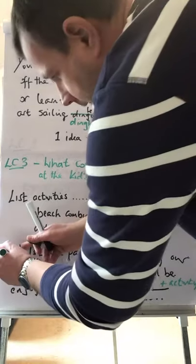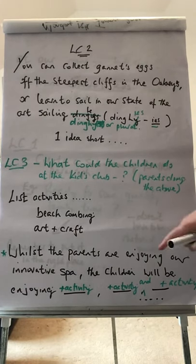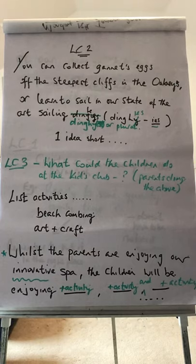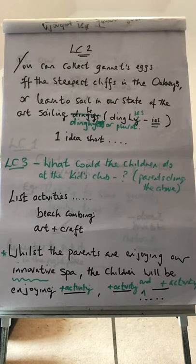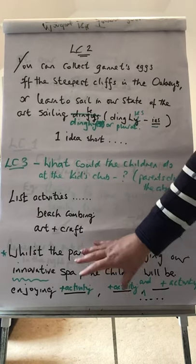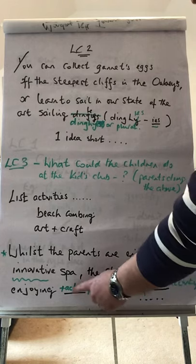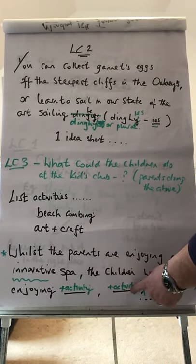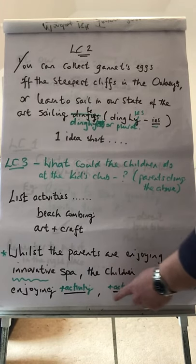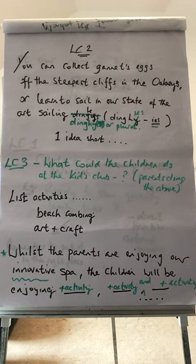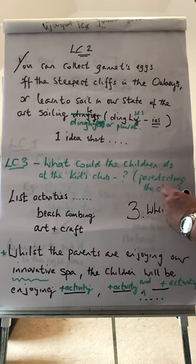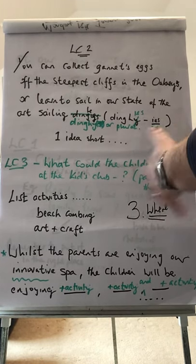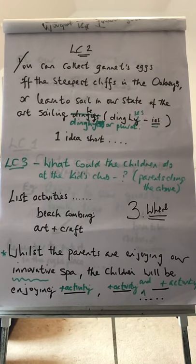This time I'm going to give you the sentence starter. So: 'Whilst the parents are enjoying our innovative spa' — that's a key word I like; it tells the reader that all these facilities are new — 'the children will be enjoying...' There's your sentence starter. You now have to add in the activity: activity one, including where it might be taking place; activity two, including where it might be taking place. A comma separates activity one from activity two, and remember you might need to insert the word 'and' when you add your third activity. So choose three activities and include where each is taking place — beachcombing on the beach, art and craft activities in our workshops. Try to be as descriptive as possible and tell the potential customers where these activities will be taking place.